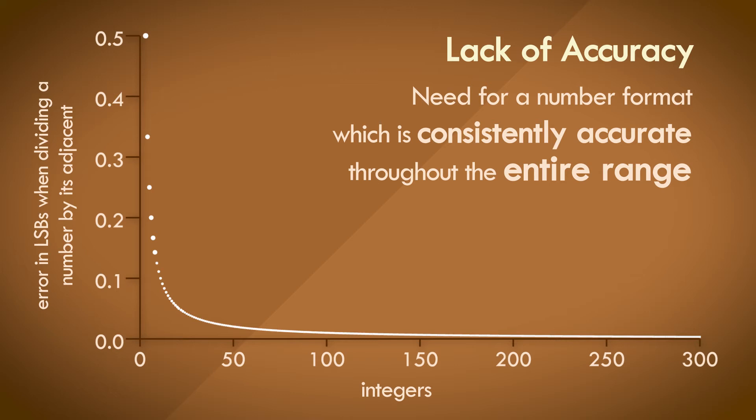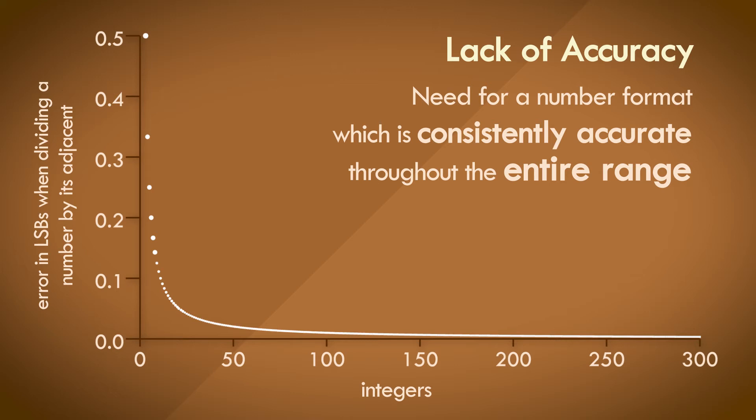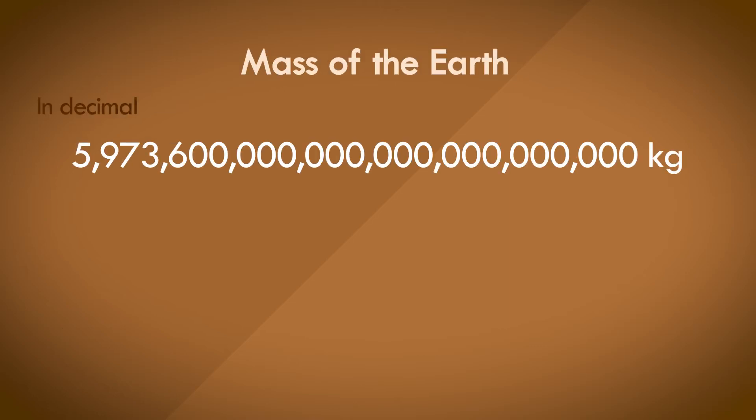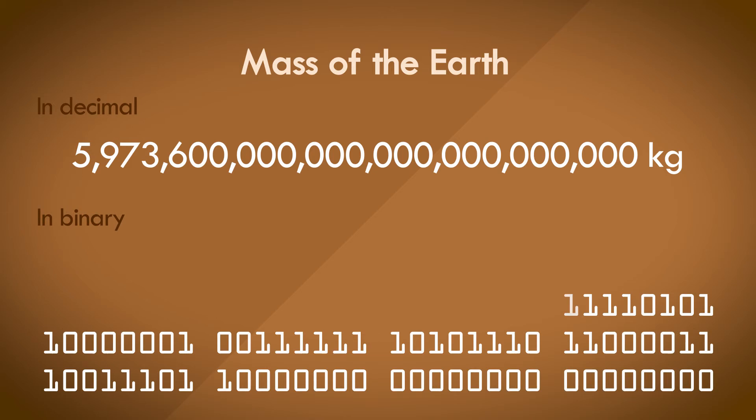We'll take a look at range first. Let's take a step back and look at how scientists deal with really large and really small numbers. Take the weight of the earth for example. That's a lot when represented in decimal. It's a lot more when represented in binary. You need 84 bits to store this.